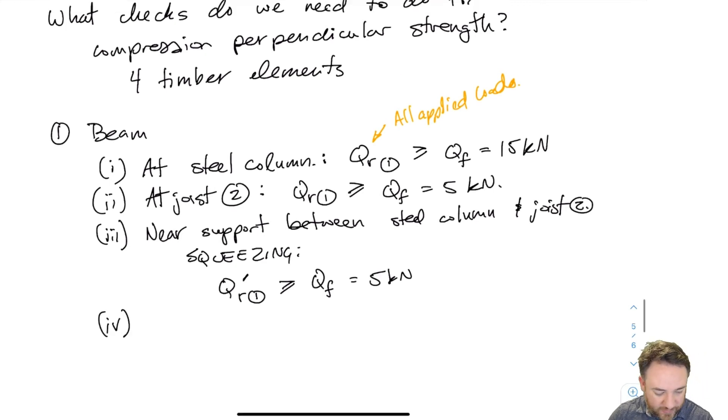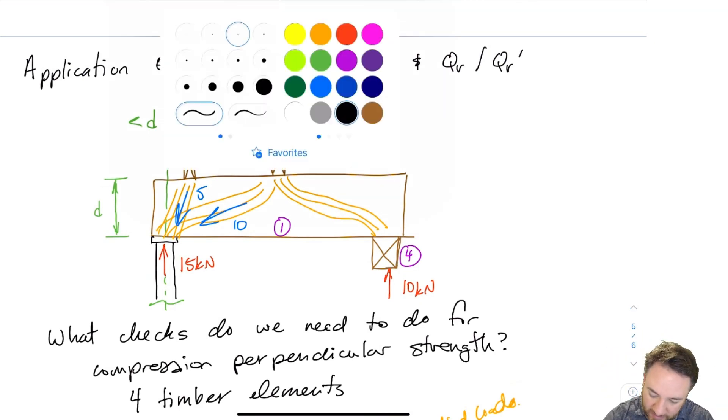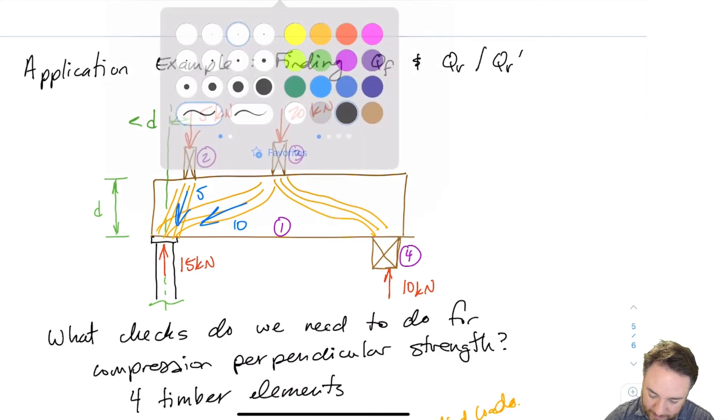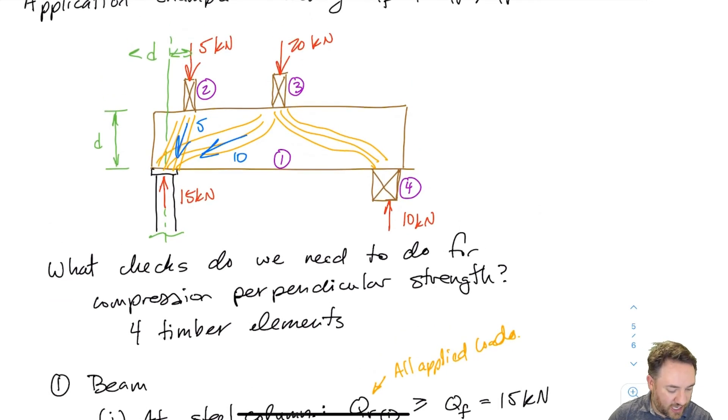Then number four and five are a bit easy because I just basically have for the beam, I have to check the bearing of number three on the beam here and number four pressing on the beam. So I'm just going to check those two for local. No squeezing effects at either of those ones because none of the supports are within D of each other. And when I do those, I check them against obviously the loads that are being applied at joist three, which is 20 and at joist four, which is 10. So now I've checked all of the loads coming on the beam, right? So I've checked the beam strength.